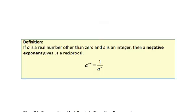Here is the formal definition. If a is a real number other than 0 and n is an integer, then a negative exponent gives us a reciprocal. We can't have a equal 0 because that would put 0 in the denominator. As long as a is nonzero and n is any integer, a to the negative n equals 1 over a to the positive nth power.